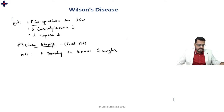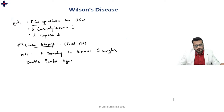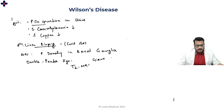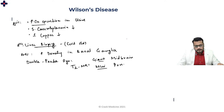The double panda sign gets its name because the T2-weighted MRI shows two distinct patterns: the 'giant panda' sign seen in the midbrain, and the 'miniature panda' (or cub panda) sign seen in the pons — hence 'double panda sign.'